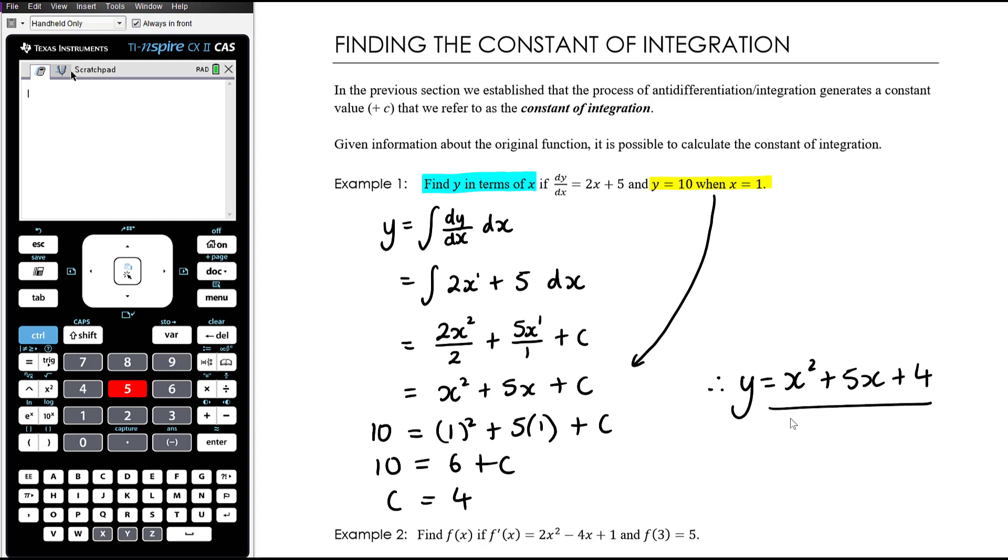So this line here hasn't answered the question. This is y in terms of x and c. Alright, so we want y just in terms of x, and we've got enough information to work out c so that we just have an expression for y that is in terms of x. Okay, let's have a look at example 2.